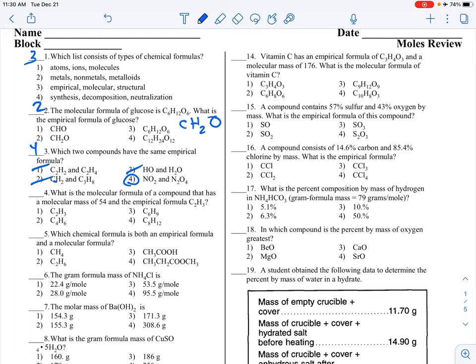What is the molecular formula of a compound with molecular mass of 54 and empirical formula C2H3? We have to find the empirical GFM. The GFM of carbon is 12 times 2, which is 24, and 3 times 1, which is 3. Total is 27. 54 divided by 27 is 2. I'm going to multiply both subscripts by that. So I get C4H6, choice 2.